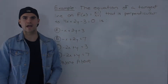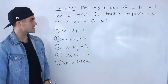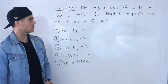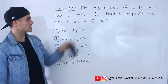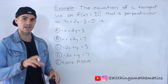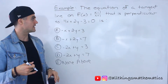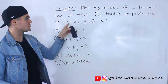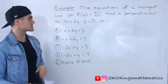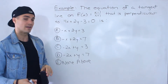Welcome back. Patrick here. Moving on to the next example. We've got to find the equation of a tangent line on the function f of x equals x minus 1 over x plus 1, that is perpendicular to the line 4x plus 2y minus 3 equals 0.